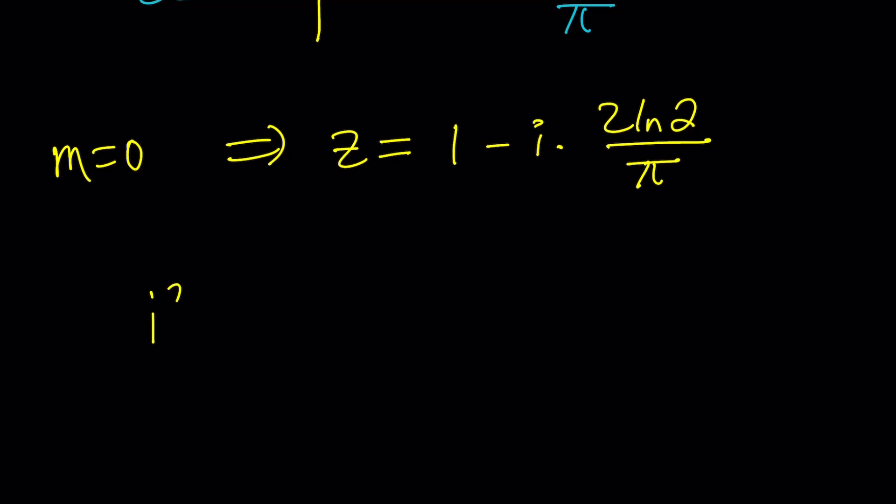We had i to the z equals 2i. And then my question is, can we just natural log both sides and that way, you know, go for the solution? Yes.